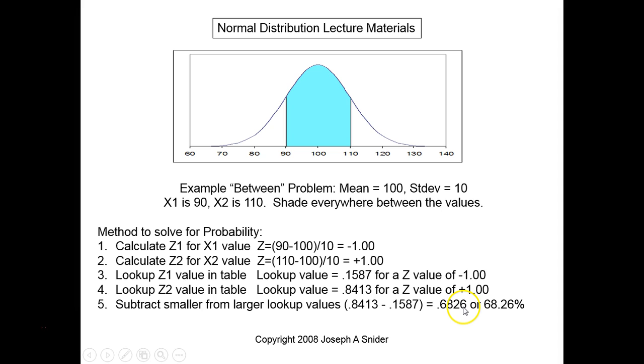The lookup value comes out to be 0.1587, I use 0.8413 minus 0.1587, you get 68.26 percent or 0.6826 as the shaded area in the middle. Now think about that for a second, why that step number five, how that works.